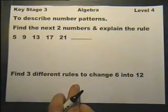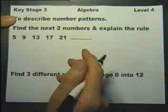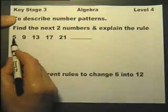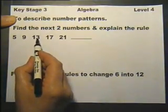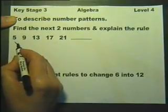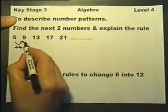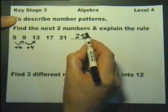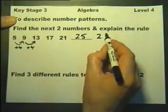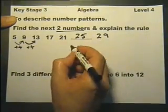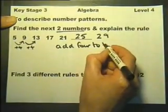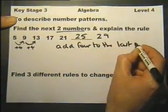Still looking at algebra level 4: describe number patterns. For example, find the next two numbers and explain the rule. Looking at these numbers, each time 4 has been added on. So adding 4 onto 21 gives 25, and adding 4 onto 25 gives the next number. Explain the rule: add 4 to the last number.